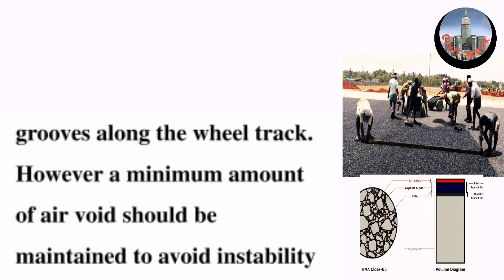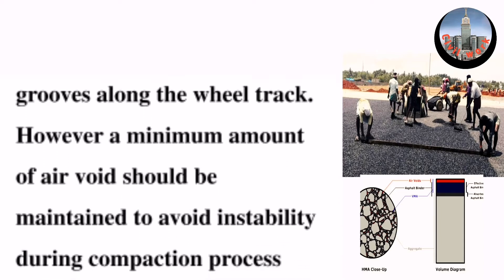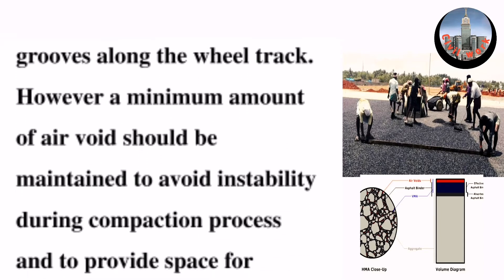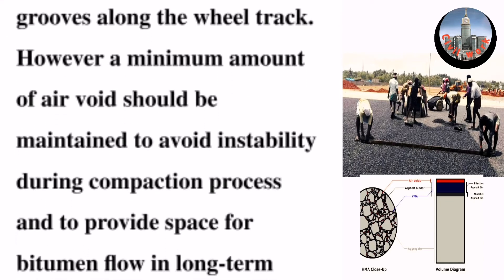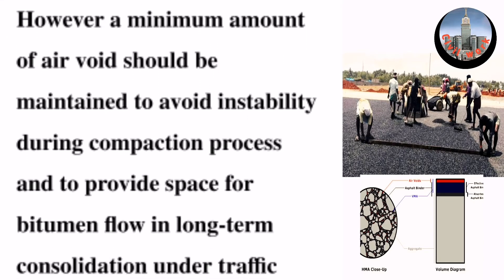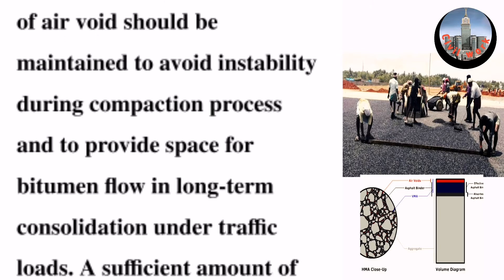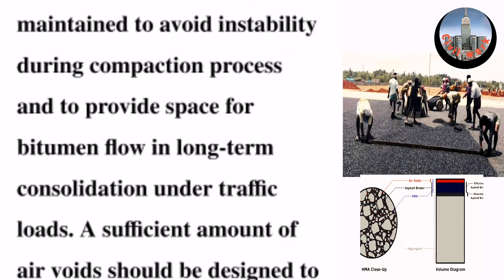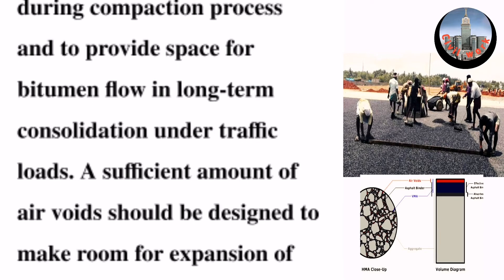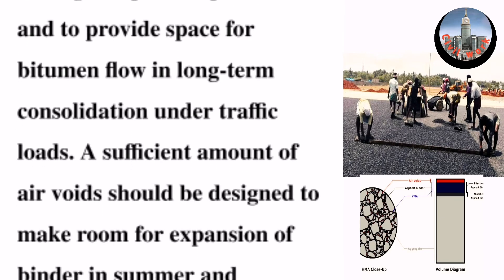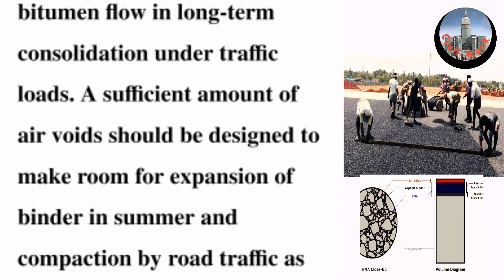Differential compaction results in the formation of ruts and grooves along the wheel track. However, a minimum amount of air void should be maintained to avoid instability during the compaction process and to provide space for bitumen flow in long-term consolidation under traffic loads.